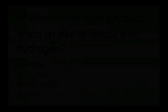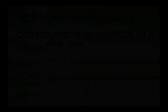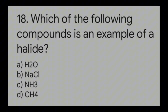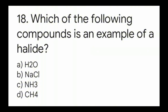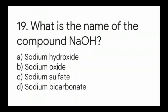Question number seventeen: what is the main product when an alkene reacts with hydrogen? Question number eighteen: which of the following compounds is an example of a halide? The right answer is option B, NaCl. Question number nineteen: what is the name of the compound NaOH? The right answer is option A, sodium hydroxide.